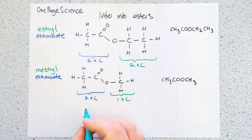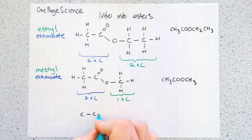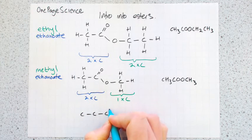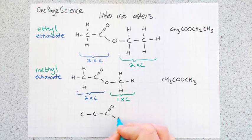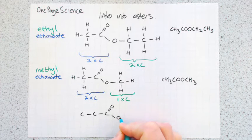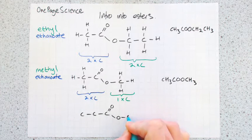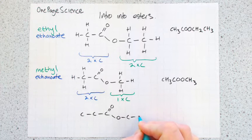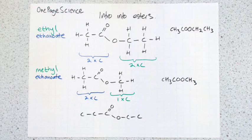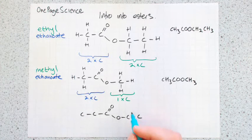So this time we'll have three carbons on the left. So one, two, three. Double bond to an oxygen. Single bond to an oxygen. And let's have two carbons on the right-hand side. So one, two. And then we go in, just like before, and put in all the hydrogens that we need.